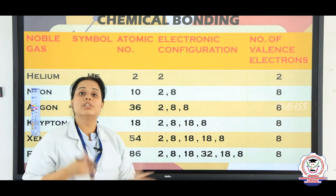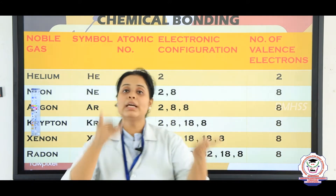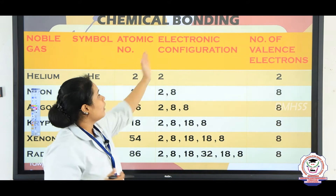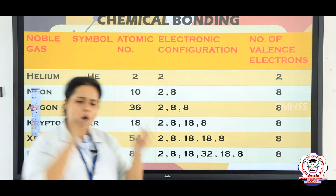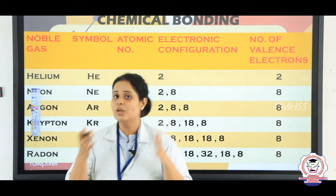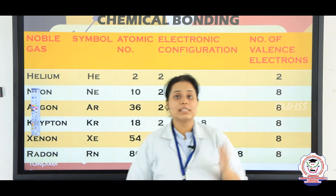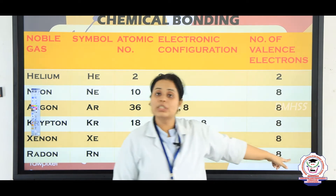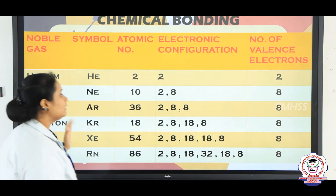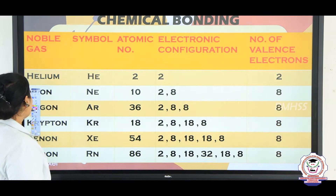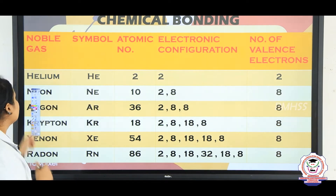Chemical bond will generally happen according to the periodic trend or electronic configuration. In electronic configuration, all atoms want to reach the electronic configuration of the noble gases — that is the last end of the periodic table. Let us see what are the electronic configurations of these elements.